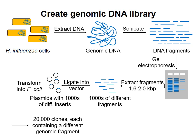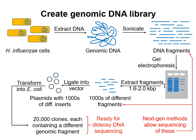The researchers could obtain a lot of each plasmid in the library by growing each clone and extracting the plasmid DNA. This plasmid DNA was then sequenced by the Sanger or dideoxy method. Next-generation sequencing methods allow amplification and sequencing of DNA fragments, so there's no need to ligate the DNA fragments into a vector and transform into E. coli in modern genome sequencing protocols. The sequencing of the H. influenzae DNA library will be described in the next video.